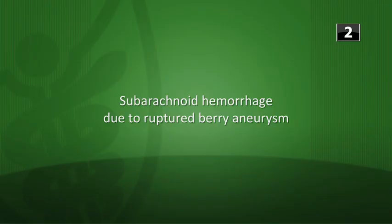Next question: a 40-year-old man with a history of Ehlers-Danlos syndrome and hypertension presents with a severe headache. Head CT is normal at presentation, and examination of the CSF reveals numerous red blood cells. What is the cause of the man's headache? This is a classic presentation for subarachnoid hemorrhage due to a ruptured berry aneurysm. Remember that Ehlers-Danlos syndrome is associated with berry aneurysms.